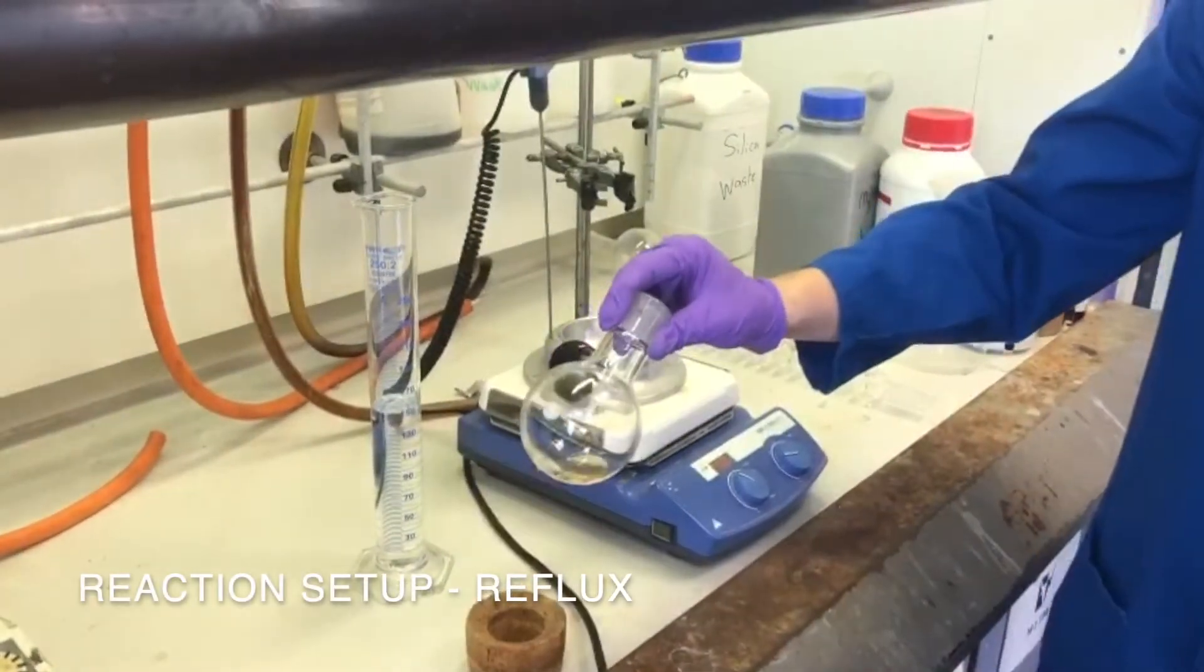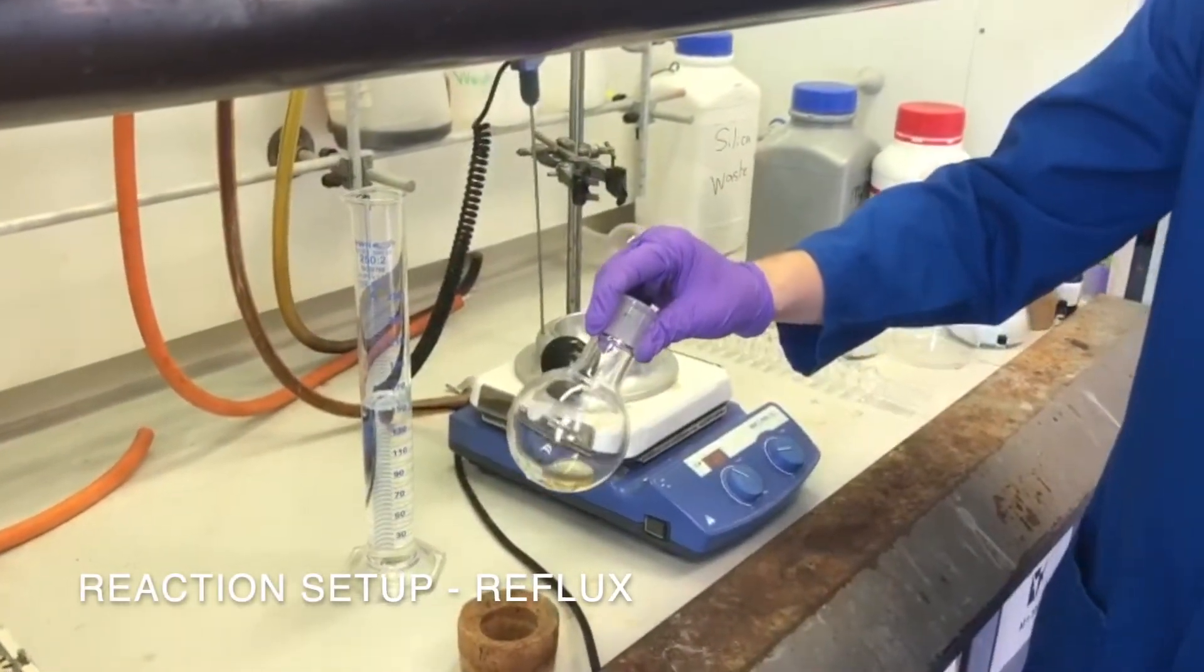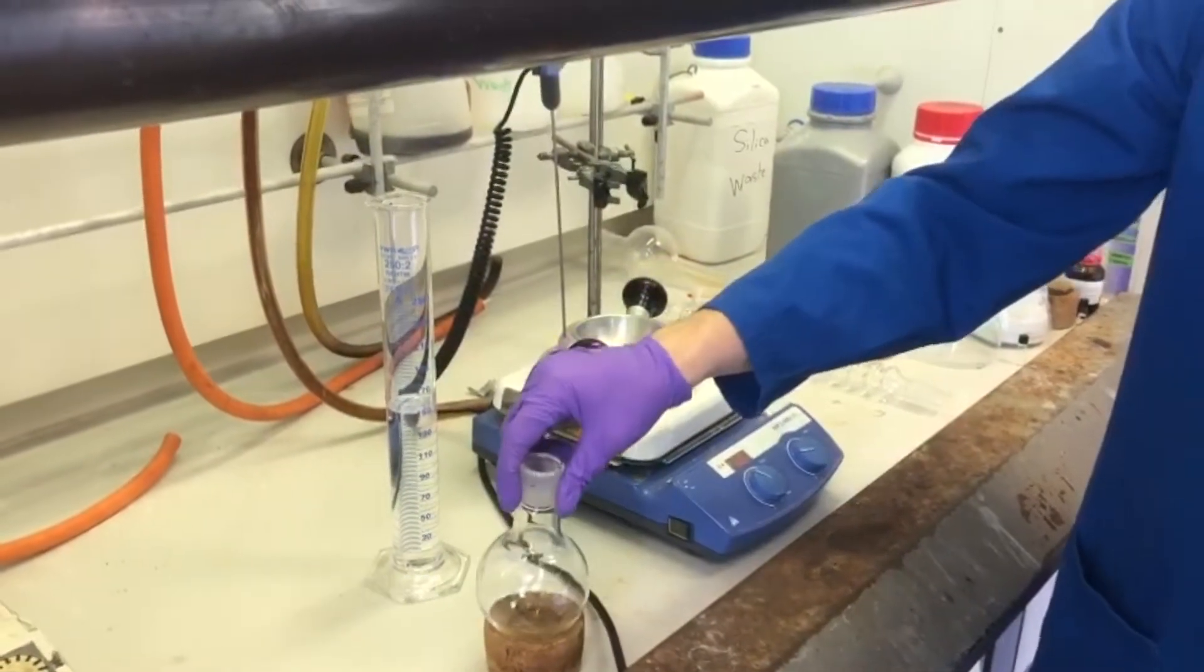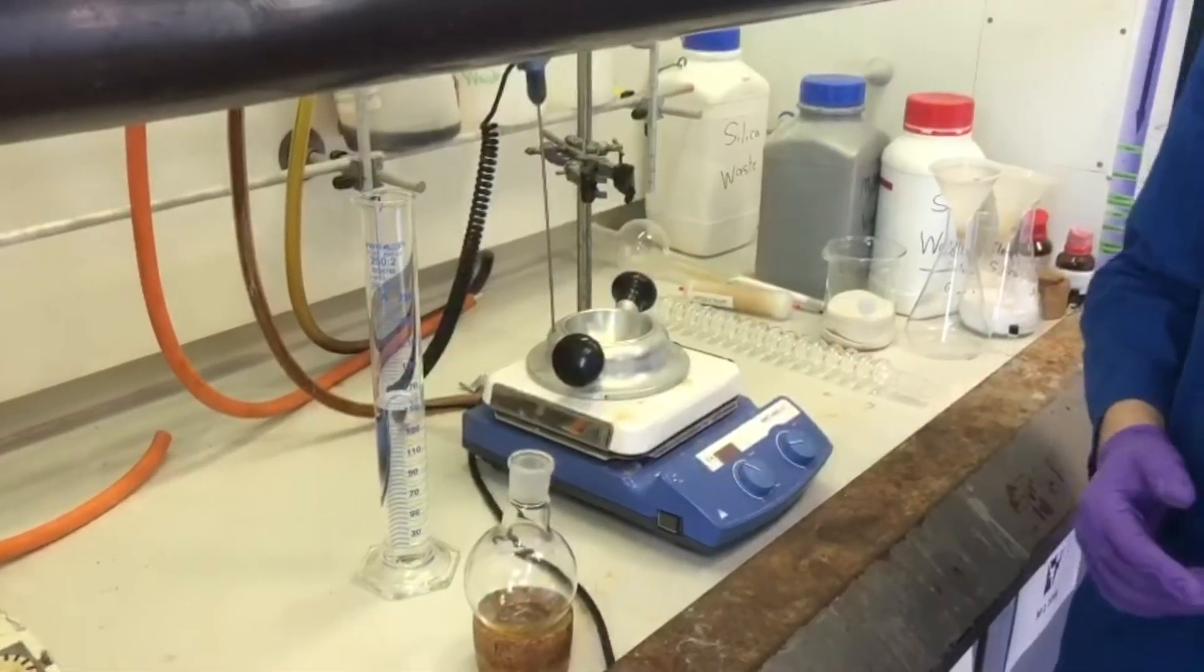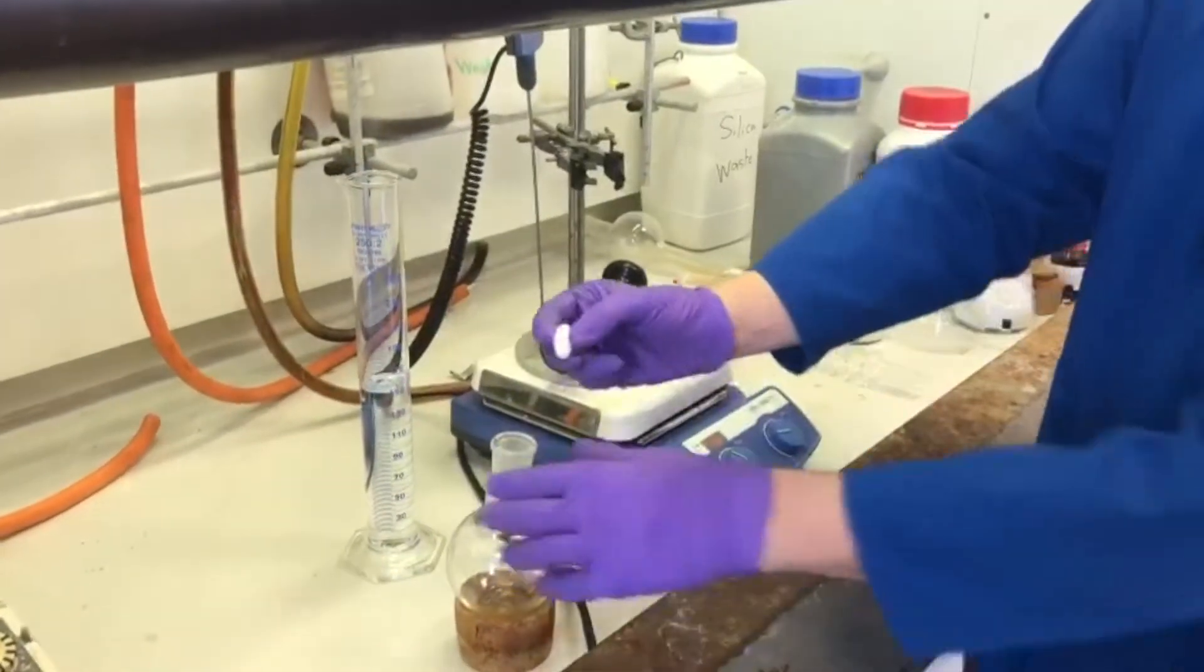As you can see we've removed the formic acid from our product, which has given us a pale yellow oil. This might be a gunky solid, and that's entirely normal, it's substrate dependent. So add a stir bar back in.